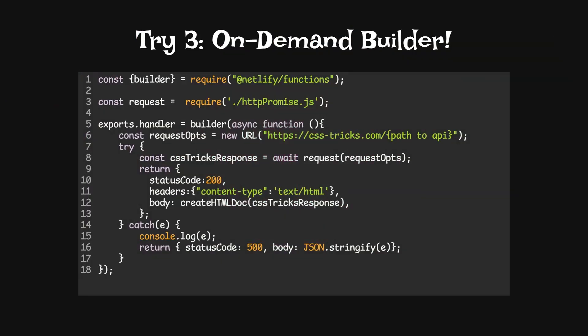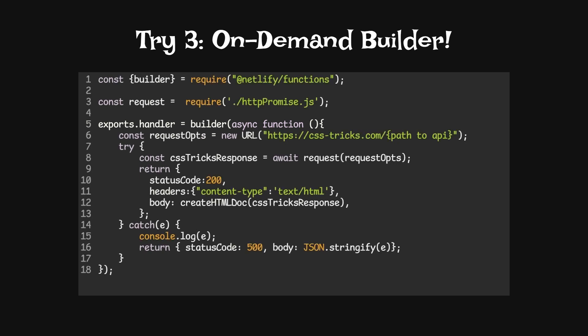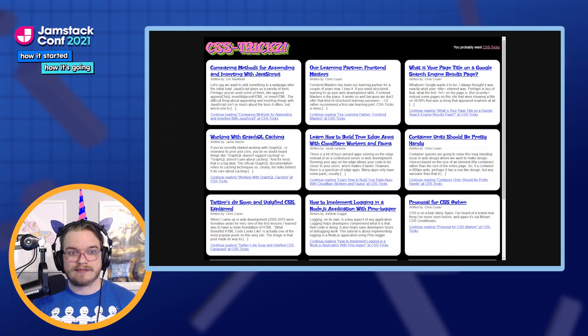This is our new example — looks very familiar. We're bringing in another package called builder from Netlify Functions. Then we wrap our async function that we're returning as the handler in that builder function, and we get a cached function call that does exactly what I explained. I also had to set up a GitHub action to bust the cache about every 12 hours, which invalidates the cache so we get fresh content. And that's how I built csstricks.com.